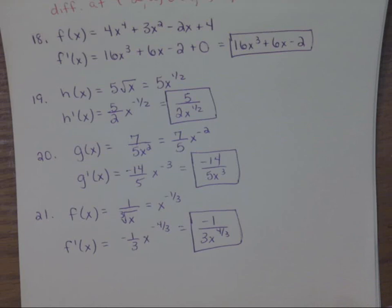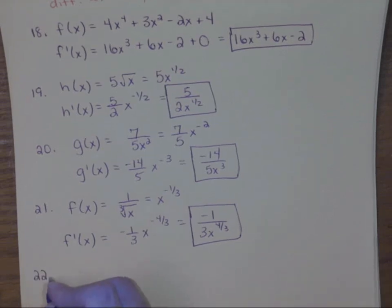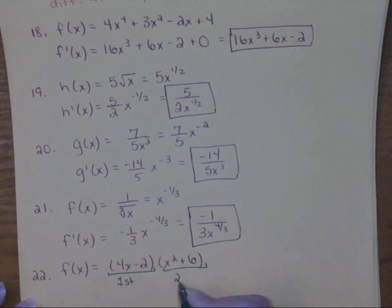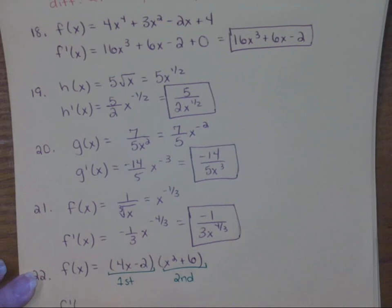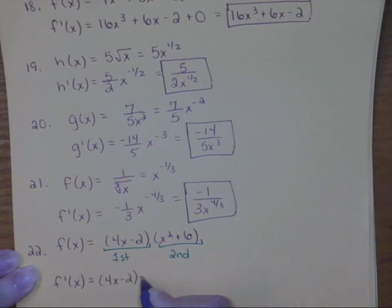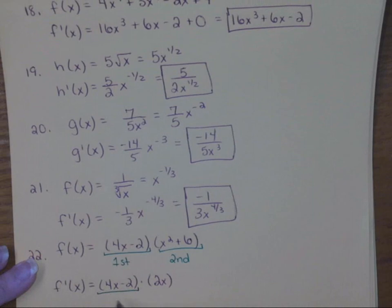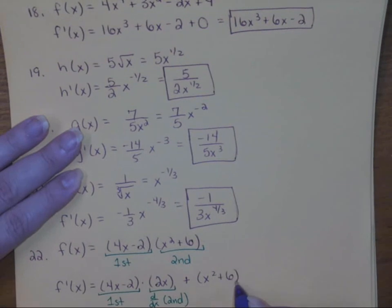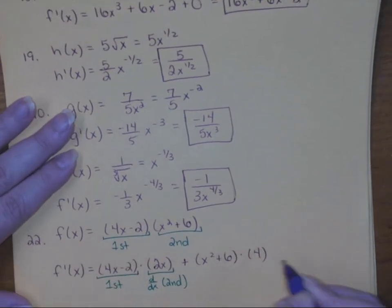So 18 through 21 are all using the power rule in some way — you just may have to rewrite it before you're ready to use it. Beginning with number 22 is when you might have to think about using some of your other rules. Notice we have a two-part function and we are multiplying one times the other, so this is my first function and this is my second. I'm going to find the derivative using the product rule. The formula is: first times derivative of the second — the derivative of the second is 2x.